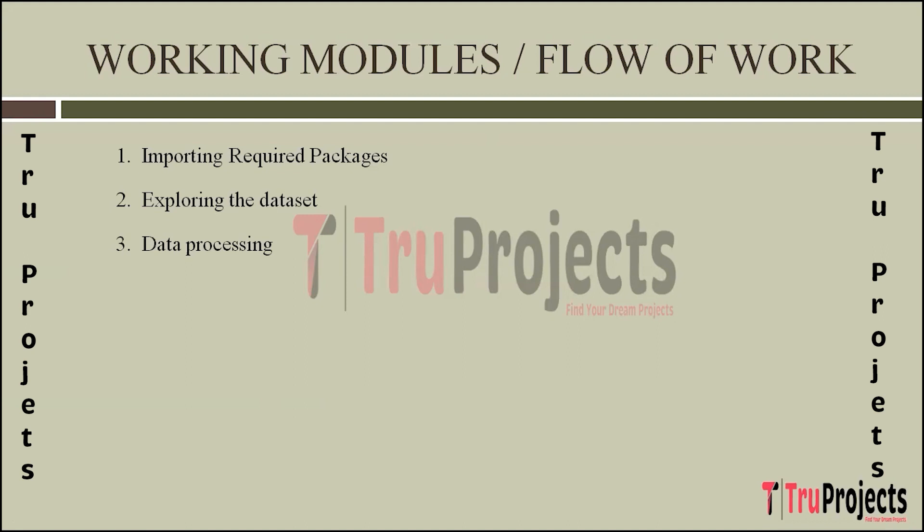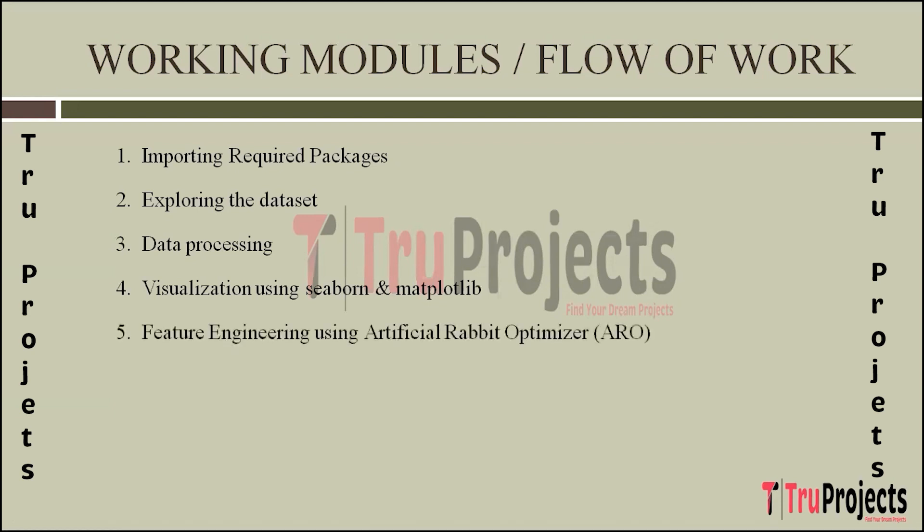The next step is visualization using Seaborn and Matplotlib. Seaborn and Matplotlib are used for data visualization. This visual analysis aids in uncovering trends, correlations, and patterns within the data, contributing to informed model development. The next step is feature engineering using Artificial Rabbit Optimizer (ARO). In this step, feature engineering is performed using ARO. This optimization enhances the model's ability to identify essential patterns relevant to heart disease prediction.